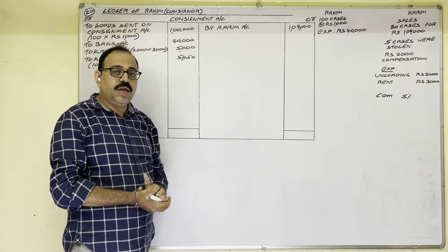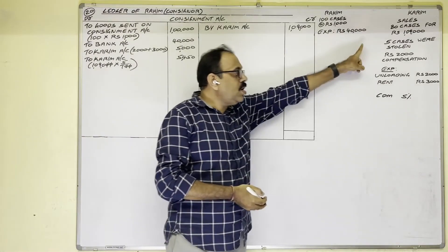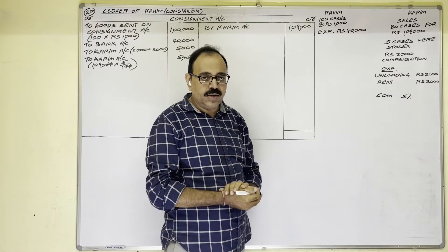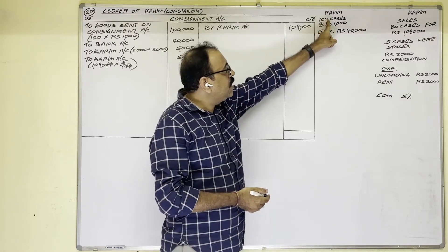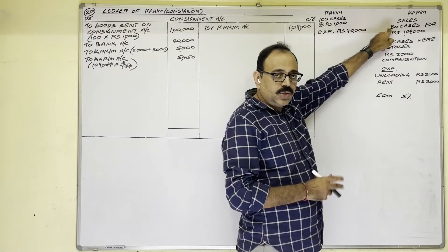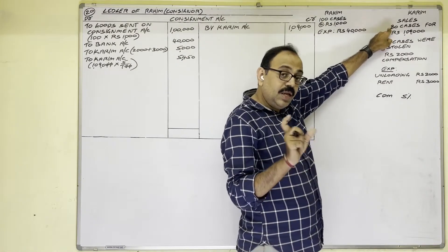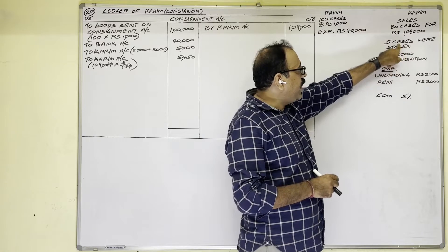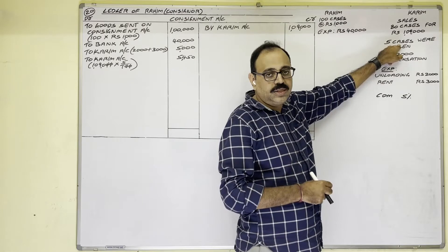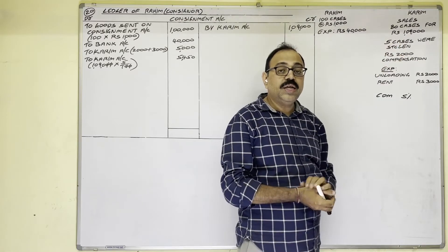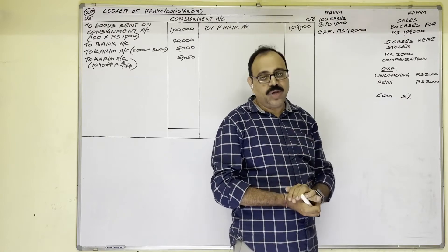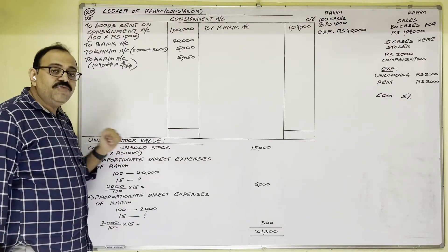Now we come to unsold stock and abnormal loss. First, let us calculate the unsold stock quantity. 100 cases were sent. Karim sold 80 cases, so 20 remain with him. Out of these 20, five cases were stolen by the employee. So 20 minus 5 equals 15 cases. The unsold stock quantity is 15 cases.